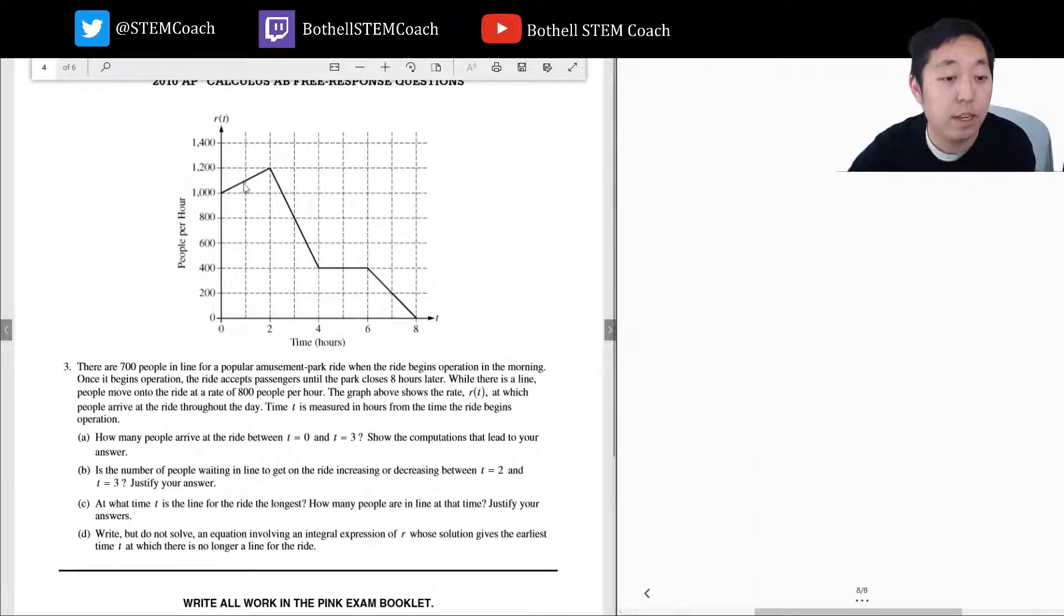There are 700 people in line for a popular amusement park ride when the ride begins operation in the morning. Once it begins operation, the ride accepts passengers until the park closes eight hours later. When there is a line, people move onto the ride at a rate of 800 people an hour. The graph shows the rate at which people arrive throughout the day. Time is measured in hours from when the ride begins operation.